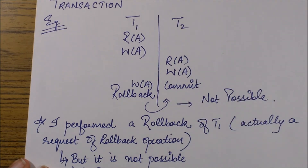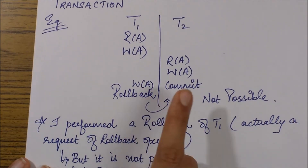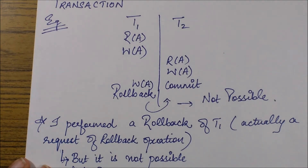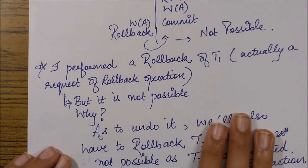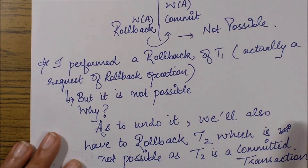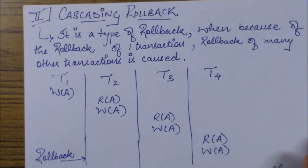T2 is a transaction that completed its work before T1 but started after T1. To remove this problem, the solution would be to complete all operations of T1, commit it, and then start the operations of T2. The problem here was that I was trying to roll back a committed transaction, which perfectly matches the definition of an irrecoverable schedule. To undo T1 we would also have to roll back T2, which is not possible as it is already a committed transaction.